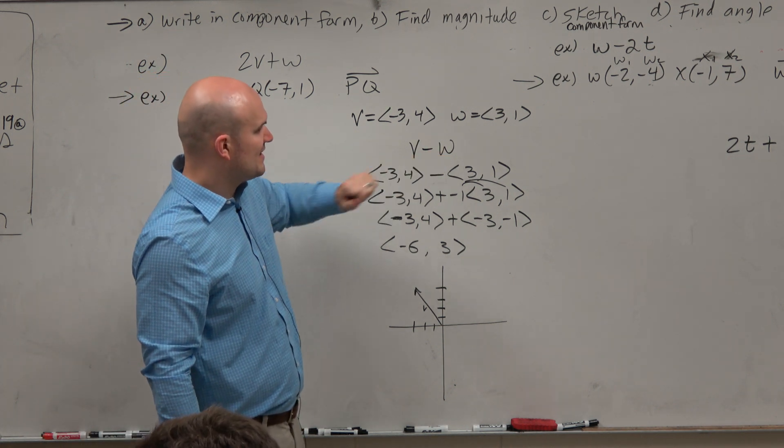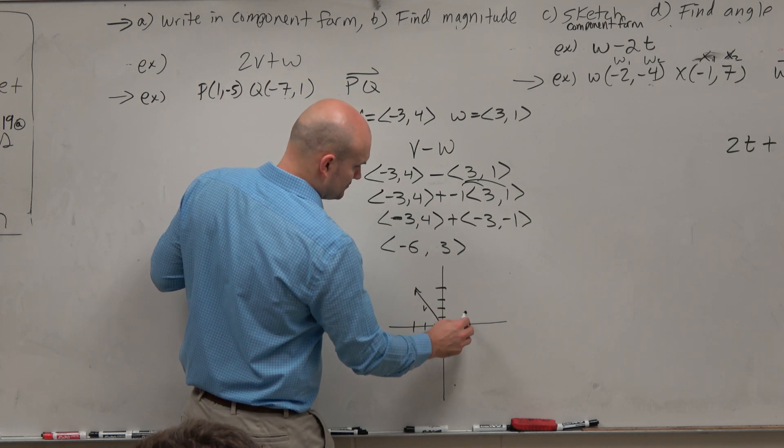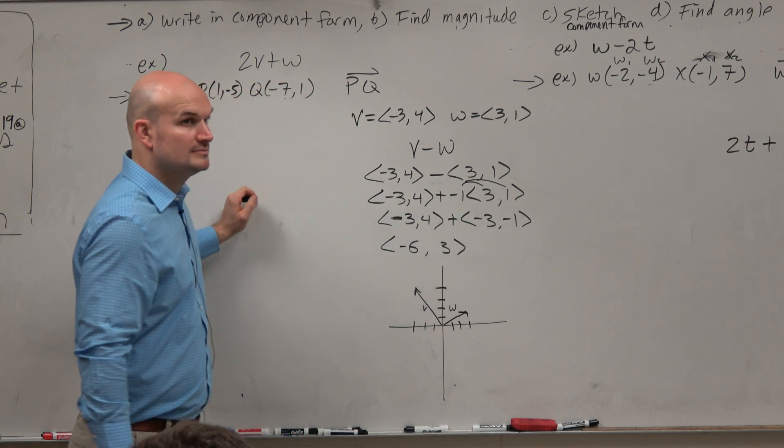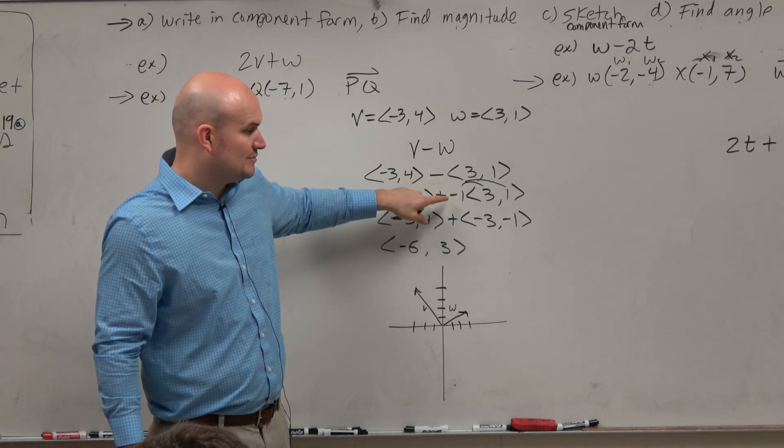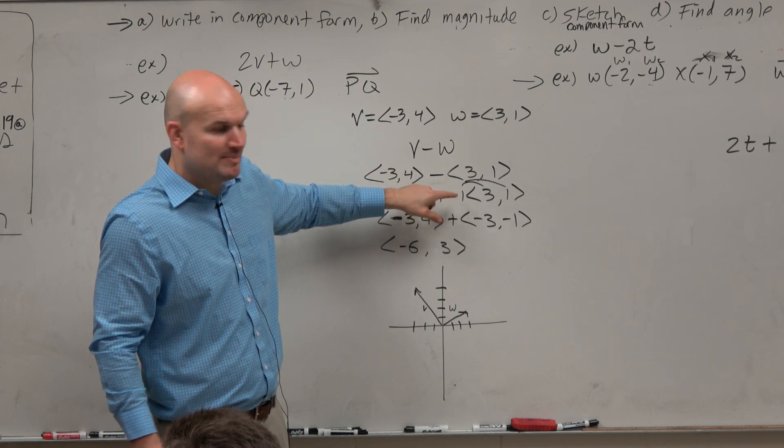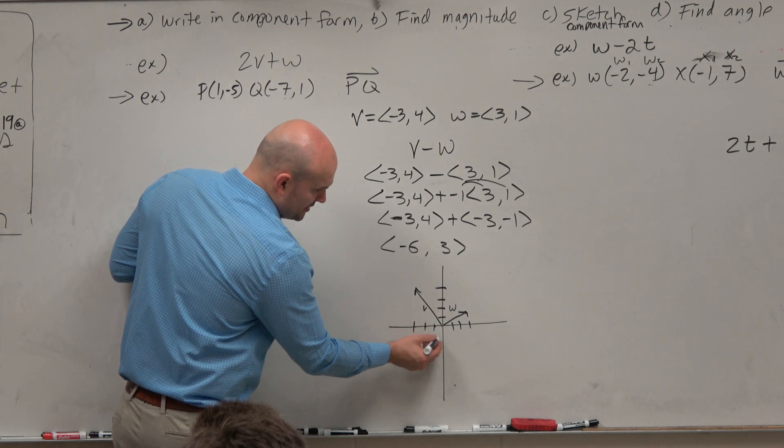Let's go ahead and graph vector w. Vector w is 1, 2, 3, 1, right? But remember, when we change this to a subtraction problem, we have to multiply by negative. So therefore, negative w is actually 1, 2, 3, down 1.